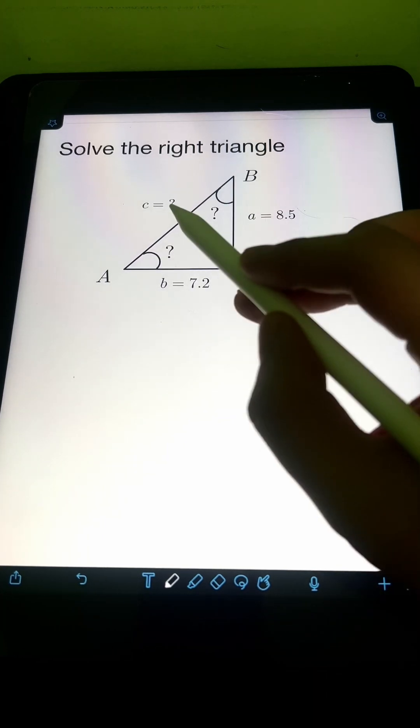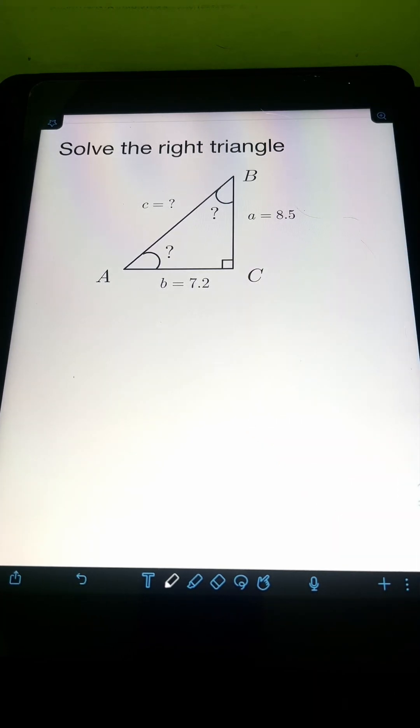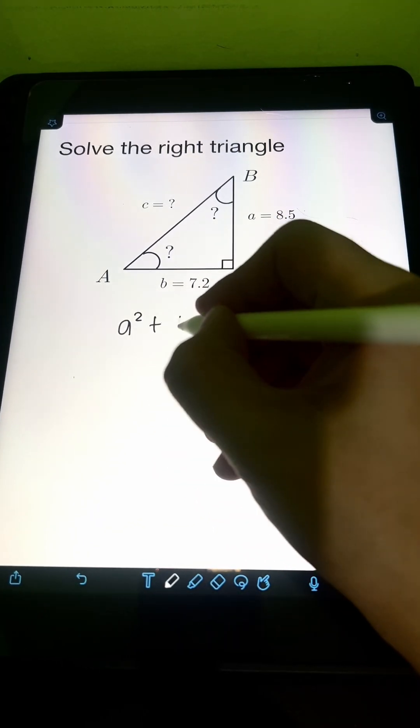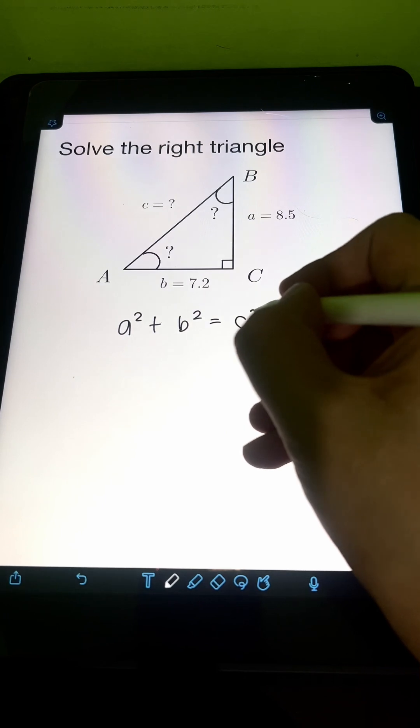So we can first find the unknown side C using Pythagorean Theorem. So we can use the equation A squared plus B squared is equal to C squared.